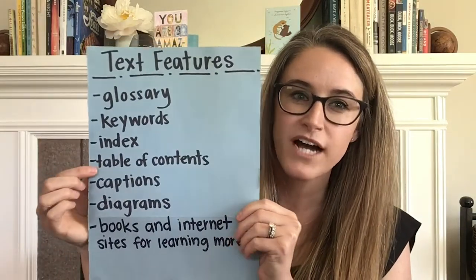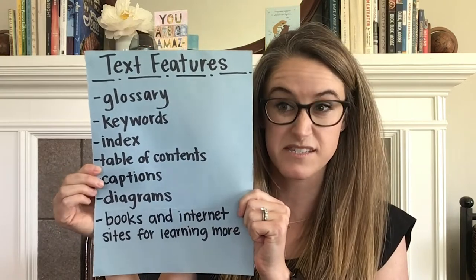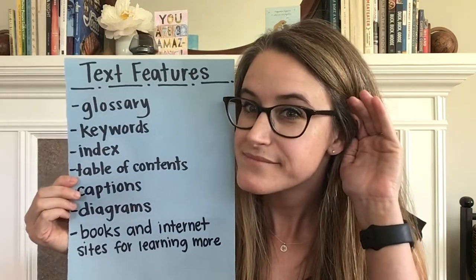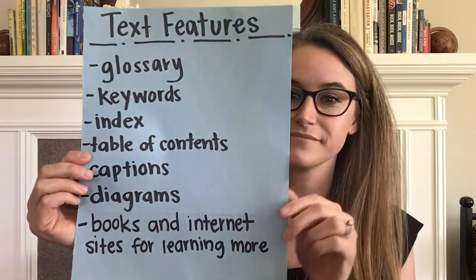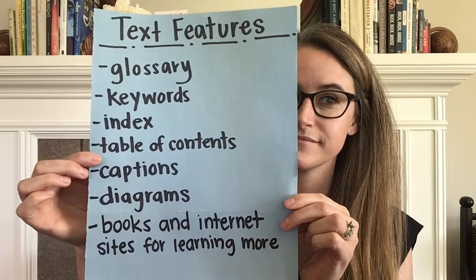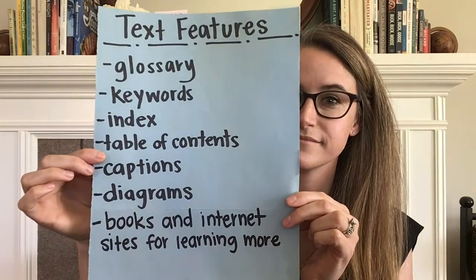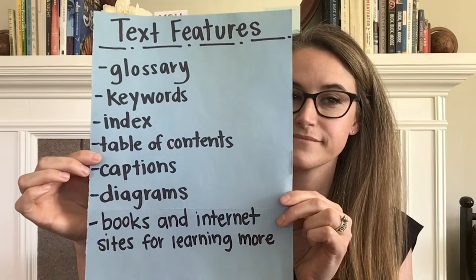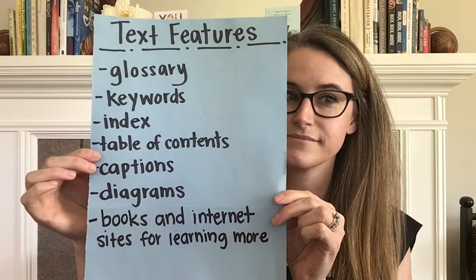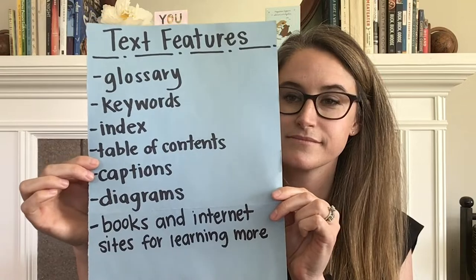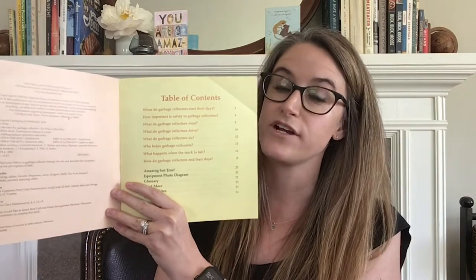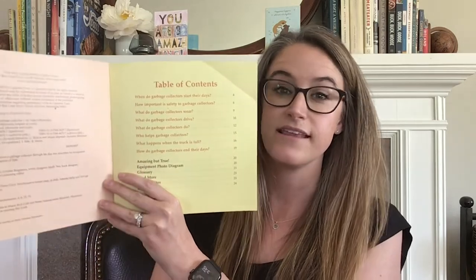Next up, a table of contents. What might you learn from a table of contents? In a table of contents you'll find a list of the chapter names, and often chapter titles so you can learn more about the different things the book is going to teach you and find out about in each chapter.